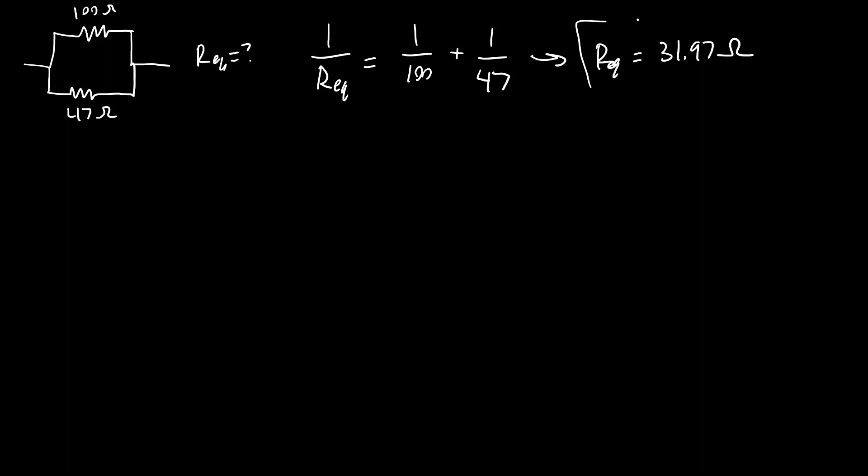So again, this is the maybe counterintuitive part for people: that value is lower than either of these resistance values individually. You might have maybe expected something in between those values, or again you might have thought, oh, more resistors means more resistance so it's going to be bigger. But no, this value is lower than either resistor on its own.